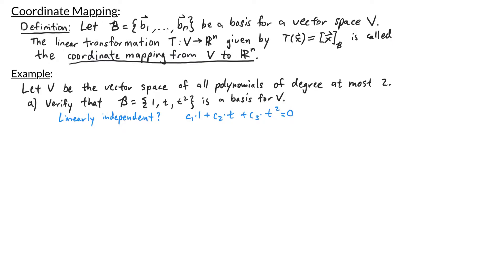On the right side of this equation, there aren't any t² terms, so c3 has to be 0. There aren't any t terms, so c2 is 0. The constant on the right is 0, so c1 also has to be 0. This means the only solution is c1 = 0, c2 = 0, and c3 = 0 — that's the trivial solution. So 1, t, and t² are linearly independent.